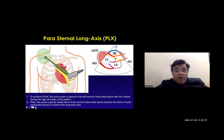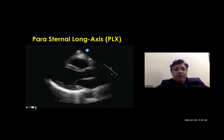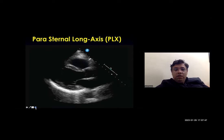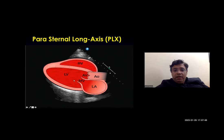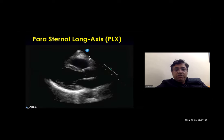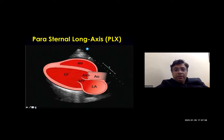The parasternal long axis view shows the right ventricle, left ventricle, aorta, left atrium, aortic valve, and mitral valve. Concentrate carefully on where we have placed the probe and what structures we are seeing: right ventricle, left ventricle, aortic valve, mitral valve, left atrium, and aorta.